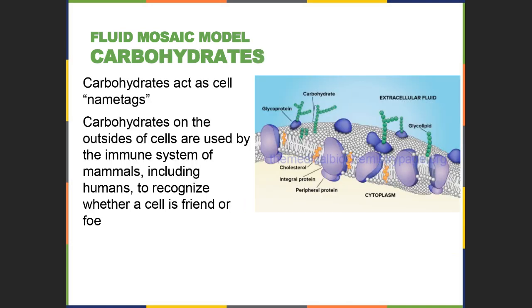The carbohydrates on the surface act as name tags, allowing cells to be identified as 'self.' Because of those carbohydrate and protein markers on the surface of our plasma membrane, the immune system knows not to destroy them. This can work against us though — cancer is a mutated cell that still has self-markers, so the immune system may not readily destroy it.